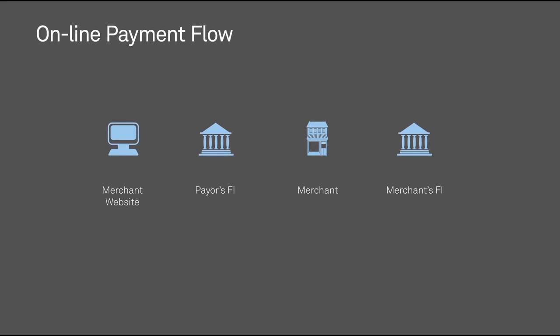First, a customer visits a merchant's website, orders a product or service, and chooses to pay for it with funds from their FI account using the online payment option, such as Interac Online. Next, the customer identifies his or her financial institution and is securely transferred by the payment application to the FI's online banking site, where the customer signs in.